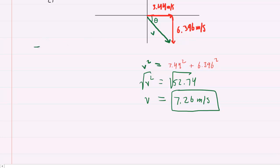And you'll notice that the tangent of that angle would equal the side opposite of the angle, which is the 6.396, divided by the adjacent side, which is 3.44. You can go ahead and divide 6.396 by 3.44, and you're going to get 1.86 approximately.